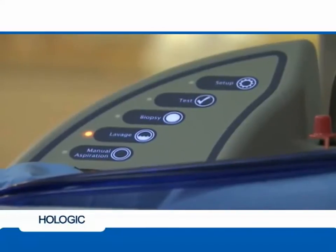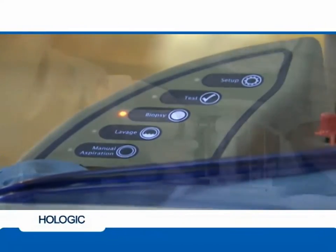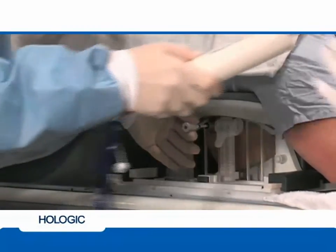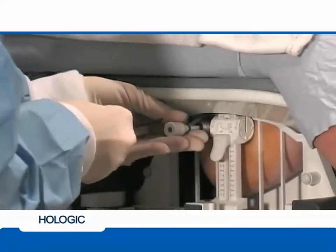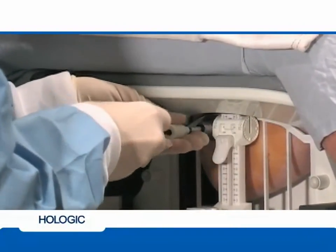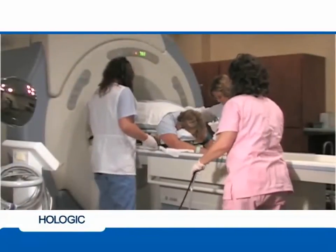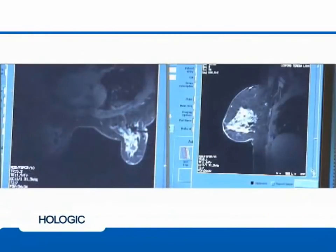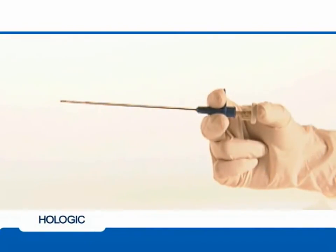Switch the console back to biopsy mode by pressing the button marked biopsy. Remove the ATEC handpiece while leaving the introducer sheath in place. To verify the successful biopsy of the area of interest, reinsert the localizing obturator back into the introducer sheath. Move the patient back into the magnet bore to acquire post-biopsy sagittal and axial image sequences. You are now ready to place a biopsy site marker. For this video demonstration, we will use the ATEC TriMark.